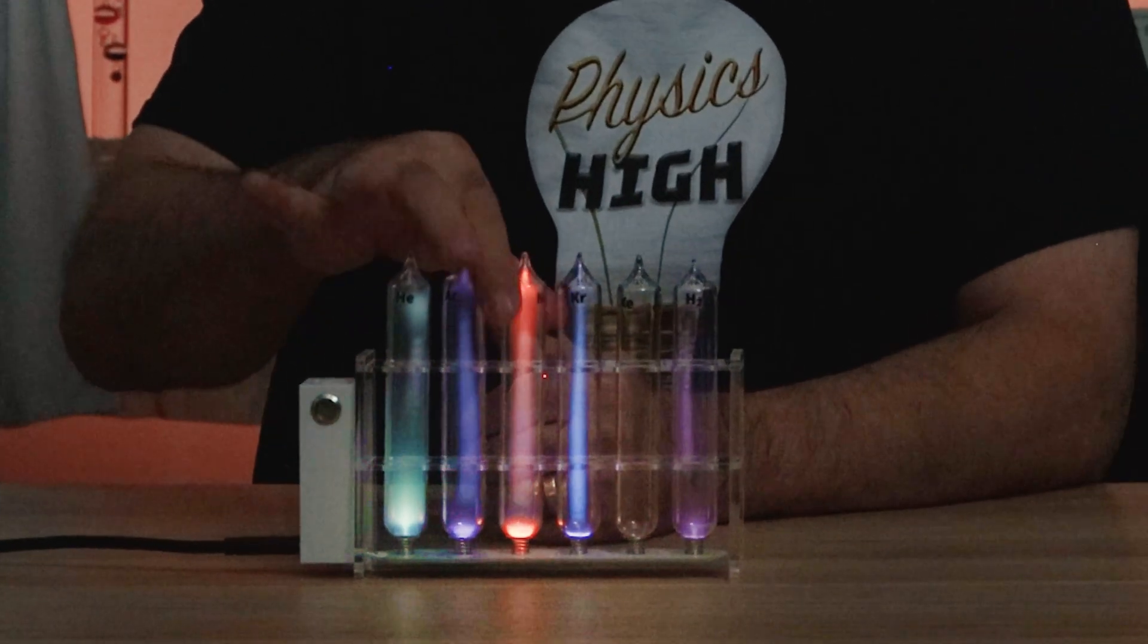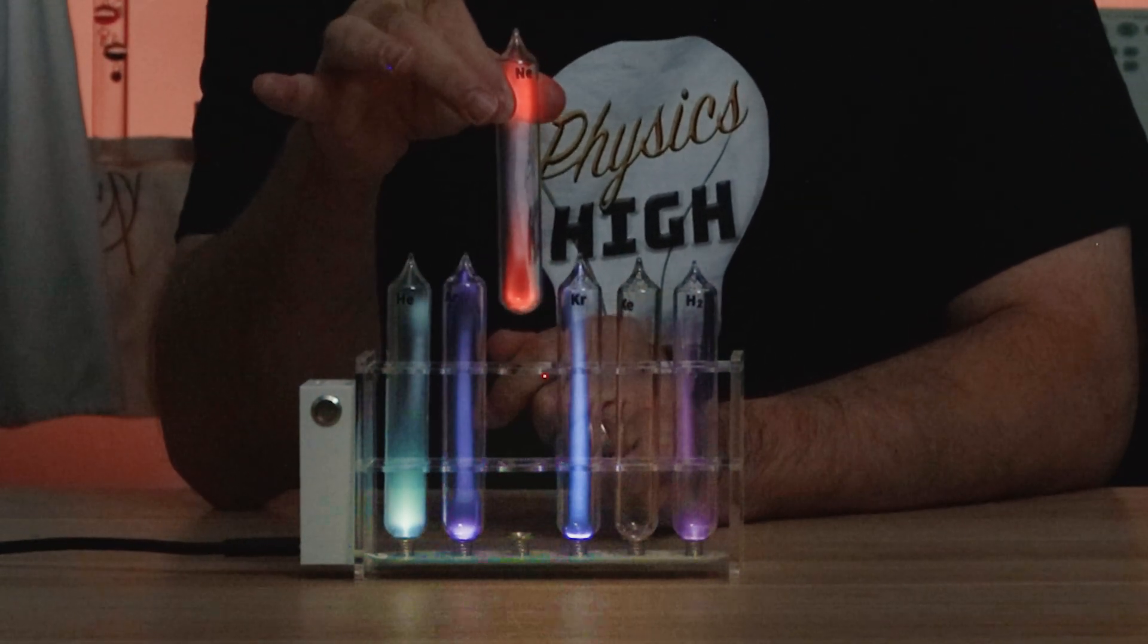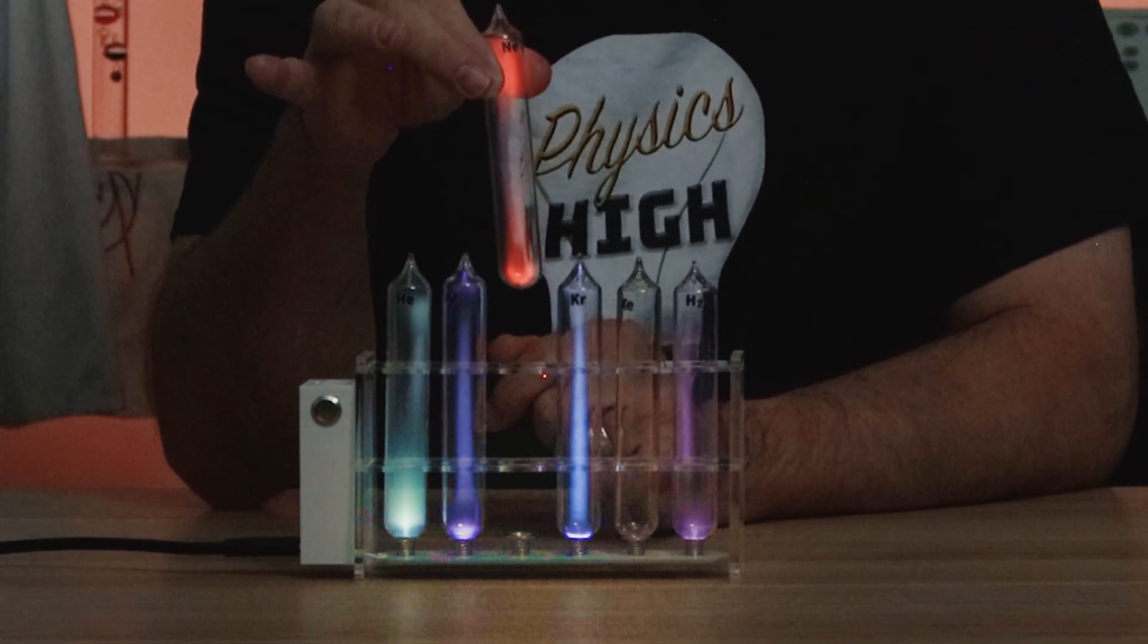Now I can demonstrate that by simply holding the tube above the circuit. You can see it still glows. Different atoms have different energy requirements and so they release different wavelengths of light.